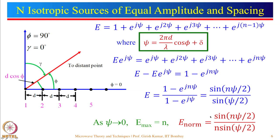Now instead of 2 elements, consider N elements. The first element is at the origin, and others are at equal spacing d. The total far-field is a sum: element at origin contributes 1, next contributes e^(jψ), then e^(j2ψ), e^(j3ψ), and so on. Here ψ = (2π d/λ)cosφ + δ, where δ is the phase difference between adjacent elements — so if element 1 is fed at 1∠0°, successive elements are fed at 1∠δ, 1∠2δ, 1∠3δ, etc.